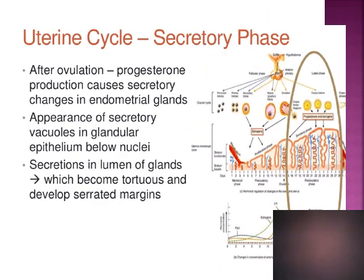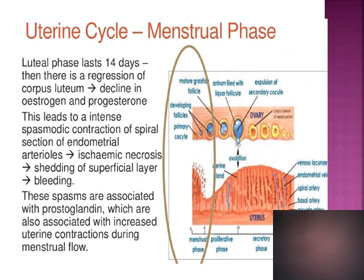Once ovulation has happened, the changes in the endometrium constitute the secretory phase. Progesterone secreted from the corpus luteum causes secretory changes in the endometrial glands — there is an appearance of secretory vacuoles in the glandular epithelium below the nuclei, and there is secretion in the lumen of glands, which become tortuous and dilated. The luteal phase of the menstrual cycle usually lasts 14 days and is relatively fixed. If the cycle is prolonged or shortened, it is usually due to changes in the follicular phase.